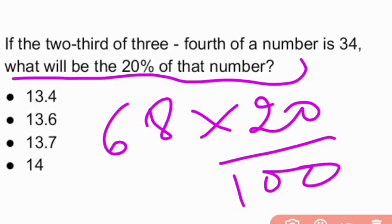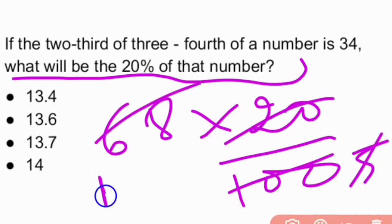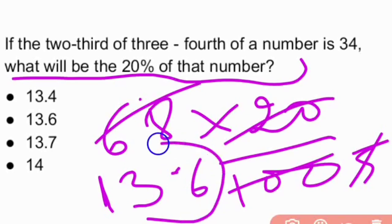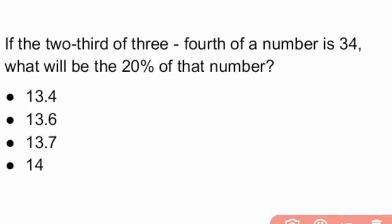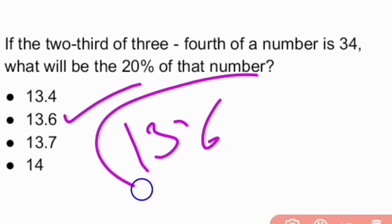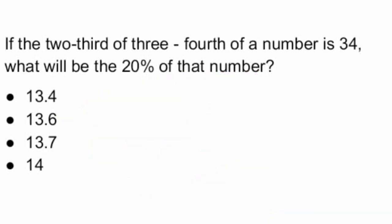So 20/100 × 68. 68 × 20/100 gives us 13.6 is the answer. 68 × 20% which is 13.6. So option B is the right answer, 13.6.